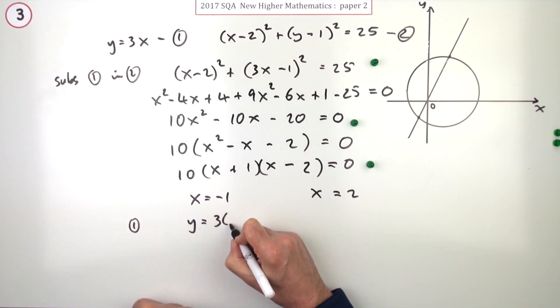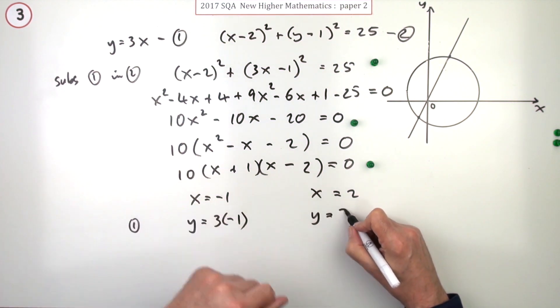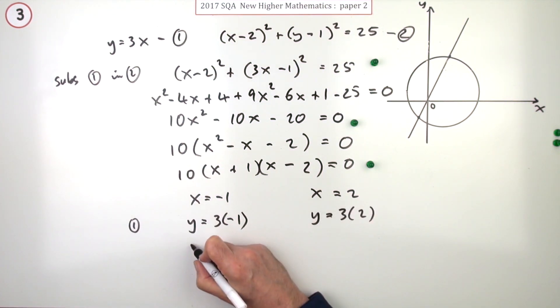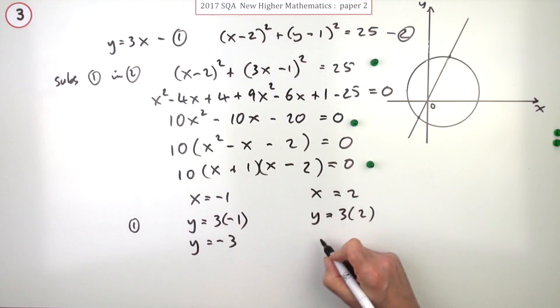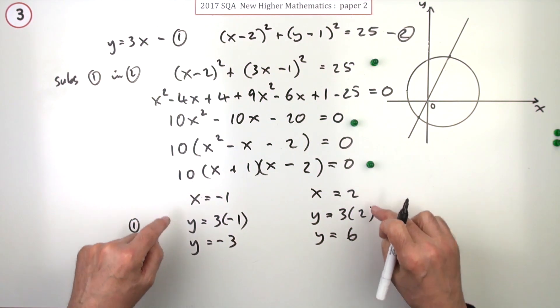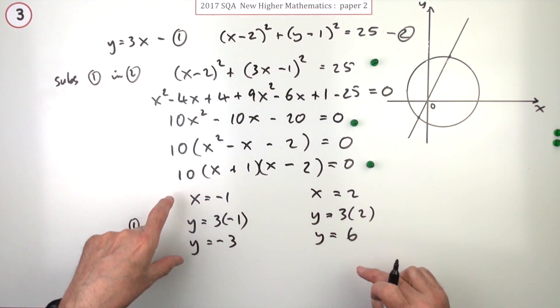Using y = 3x, if x is negative one, y is 3 times negative one, and if x is two, y is 3 times two. So y is going to be negative three and y is going to be six. There's a mark for each of these.